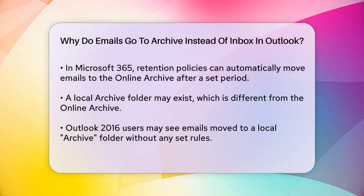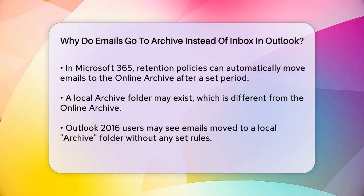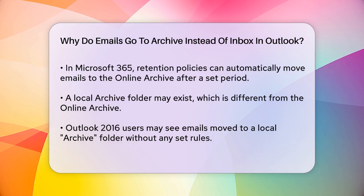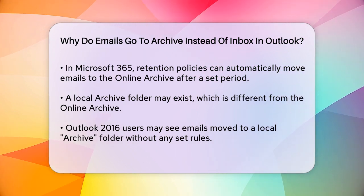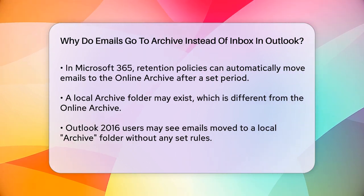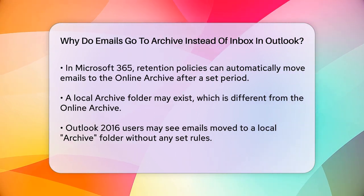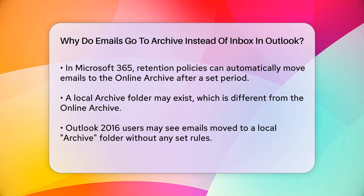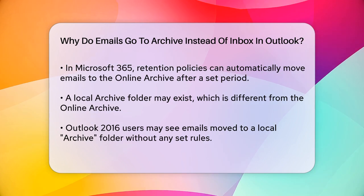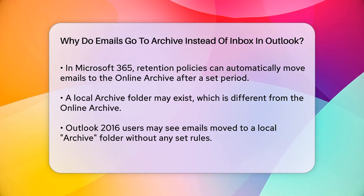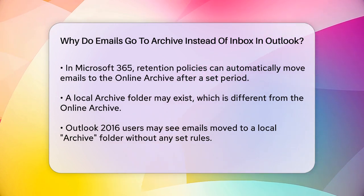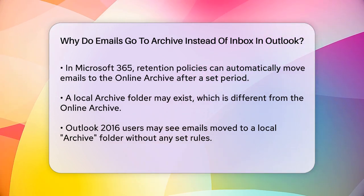Another reason emails might end up in an Archive folder is if there's a local Archive folder that's not the same as the Online Archive. For instance, if you're using Outlook 2016 and notice emails being moved to a folder called Archive without any rules or sweeps set up, it could be a local folder that's being created automatically.